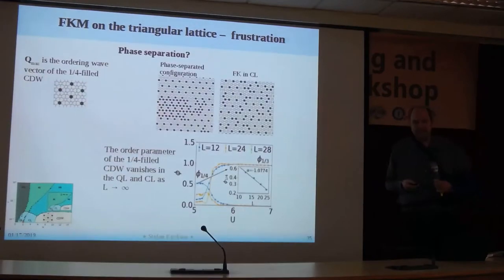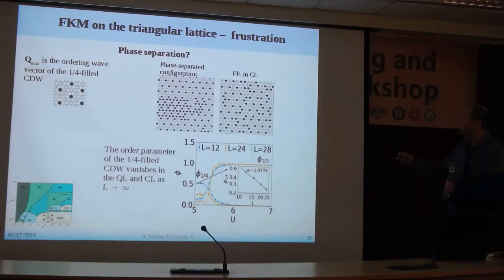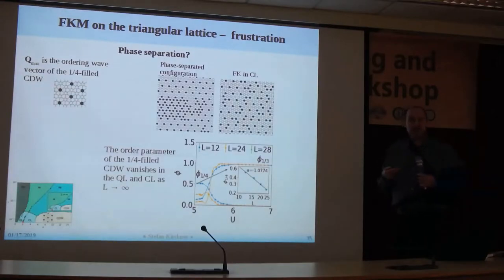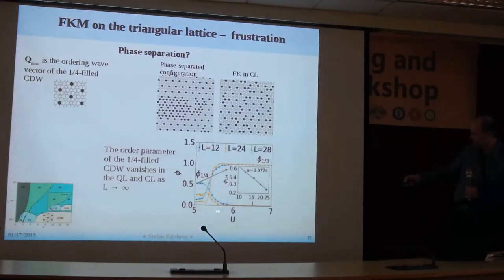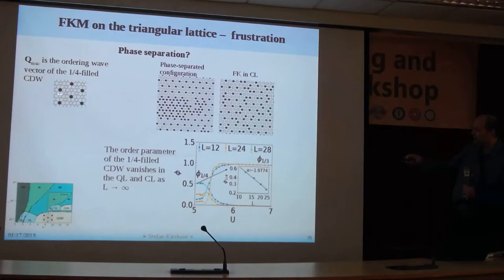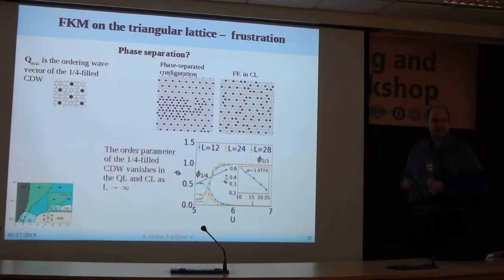What does it mean that we see this enhancement of susceptibility at a particular wave vector? It turns out that this wave vector is the ordering wave vector that would be realized at one-quarter filling. But since we enforce one-third filling, this order is not realized. One guess could be that you see phase separation. This is an actual configuration one has in the CL phase. But phase separation can be ruled out because we can measure the various order parameters and how they evolve with system size. The one-third order parameter vanishes as we leave the ordered phase. We can also measure the order parameter for the one-quarter order, and as a function of system size in that region of the phase diagram, it goes down with system size — so this is not an order parameter there.